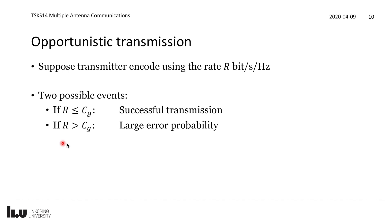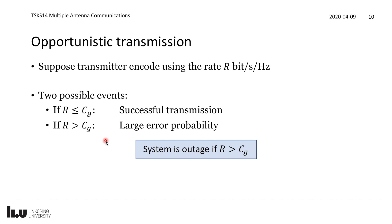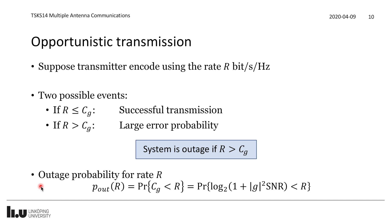We characterize outage probability for a given rate R as the probability that C(G) < R — that is, P_out(R) = P(C(G) < R) = P(log₂(1 + |G|² · SNR) < R). This is the outage probability for rate R. The shaded area under the PDF of C(G) up to value R represents this probability. The larger R is, the larger the outage probability becomes.